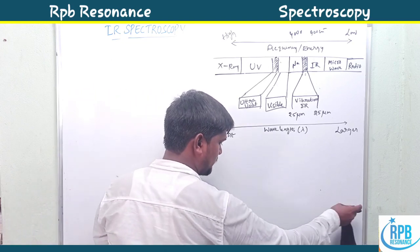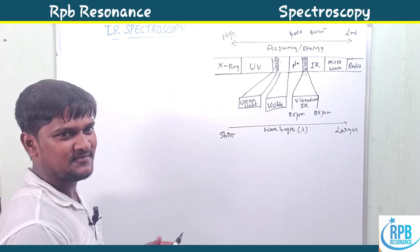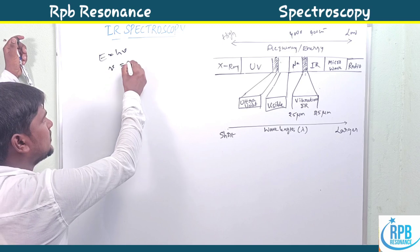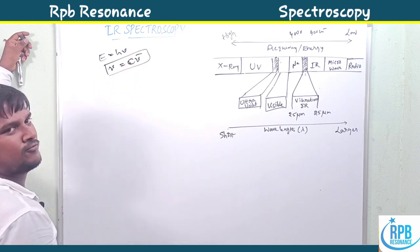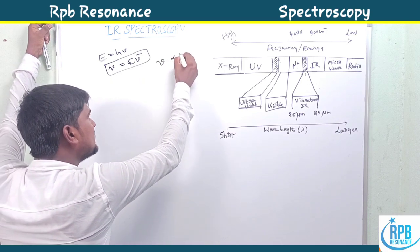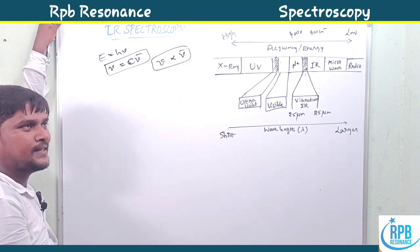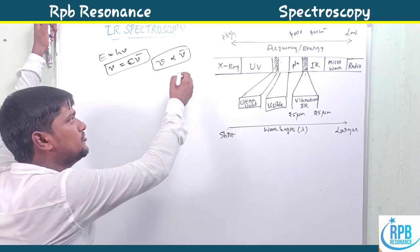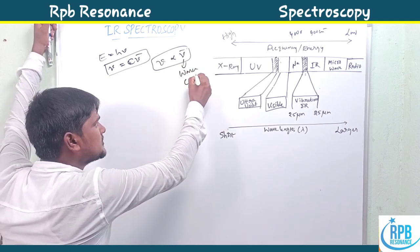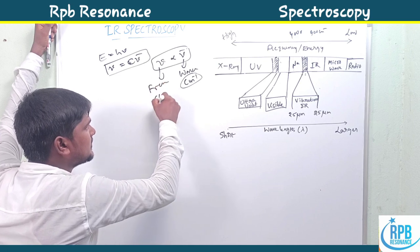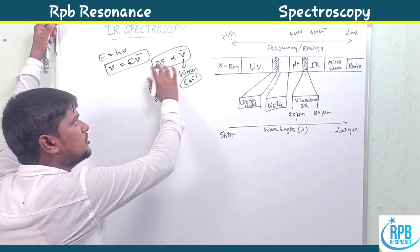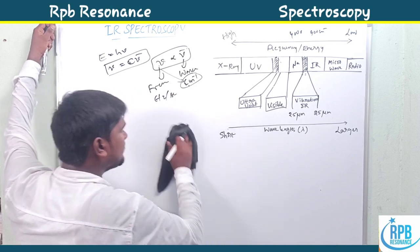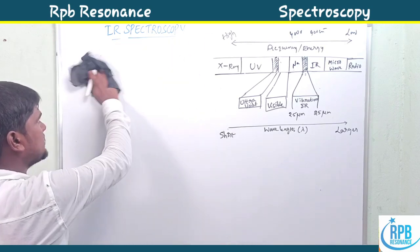Now, why do we call ν̄ (nu-bar) a frequency? We know E = hν and ν = c × ν̄, so ν̄ is the wavenumber, directly proportional to frequency. The wavenumber units are cm⁻¹, and frequency units are hertz per second. Since both are directly proportional to each other, we can use wavenumber as a representation of frequency. That's why frequency units are expressed as cm⁻¹ in IR spectroscopy.